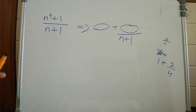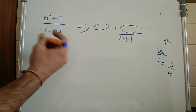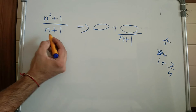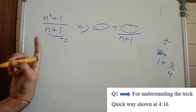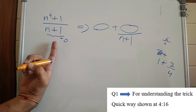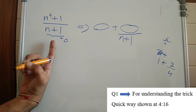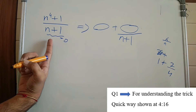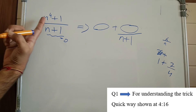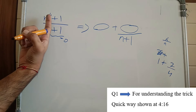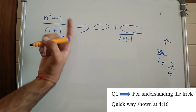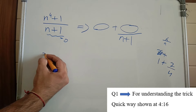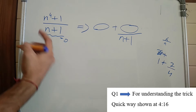How do I find the remainder? Just put the denominator equal to 0. So n plus 1 equals 0 gives n equal to minus 1. Put n equal to minus 1 in the numerator: minus 1 to the power 4 is 1, and 1 plus 1 is 2. So 2 is the remainder.